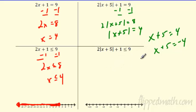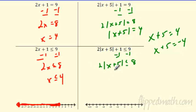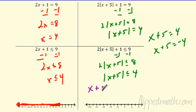How does that affect us with an inequality? Well, it's the same rules. You still have to solve for the absolute value. So you still do the same thing, solving for your absolute value. In this case, instead of an equal sign, it's an inequality. Divide both sides by two, you're going to get x plus five is less than or equal to four, just like above.